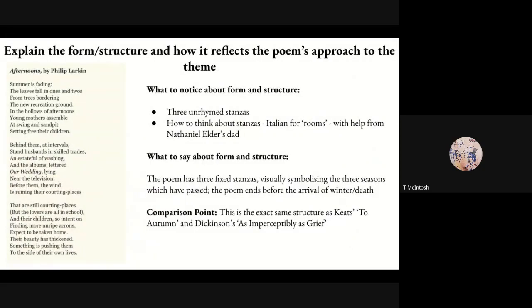How does the form and structure reflect the poem's approach to the theme? This is exactly the same as To Autumn structurally in some ways, and also As Imperceptibly As Grief — we've got three parts to it. Here we've got three unrhymed stanzas; To Autumn has three rhymed stanzas. Visually, what we've got is a representation of three seasons. Both of them end on "winter is coming" — that's the theme in all of our nature poems. Three stanzas and we're out when the fourth would have finished.